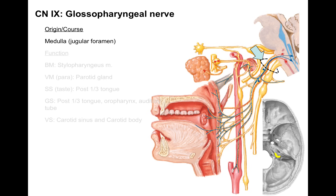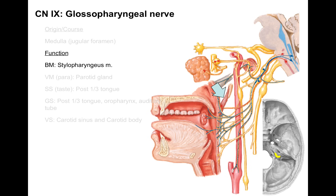When it exits, it has a number of functions. It innervates one muscle called the stylopharyngeus muscle, derived from the third brachial arch. It arises from the styloid process, goes to the pharynx, and helps elevate the pharynx when you're swallowing. It also does visceral motor, which is parasympathetic innervation to the parotid gland — the facial nerve does all the glands in the head except the parotid gland — helping make saliva.